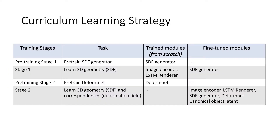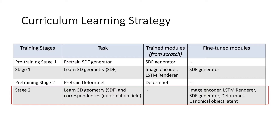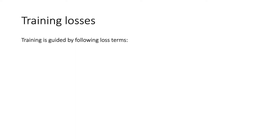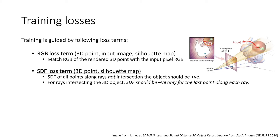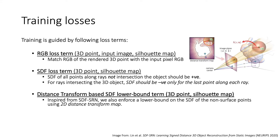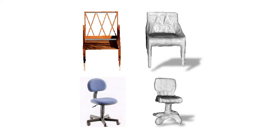More formally, the whole pipeline is trained using a multi-stage curriculum learning strategy where we first learn to directly reconstruct a 3D object from a given input image. In stage 2, we bootstrap the learning of the deformation field using the already trained modules in stage 1. Our training pipeline is guided by the following loss terms: an RGB loss term, an SDF loss term, a distance transform-based SDF lower bound loss term, and a couple of regularization terms. By doing this, we are already able to get much better structures than the mesh-based approaches.